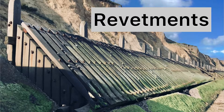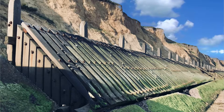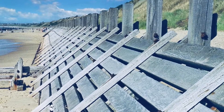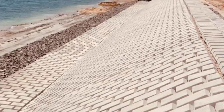Revetments are sloping structures built along the base of cliffs, or in front of sea walls. They help to absorb and dissipate the energy of waves in order to reduce coastal erosion.